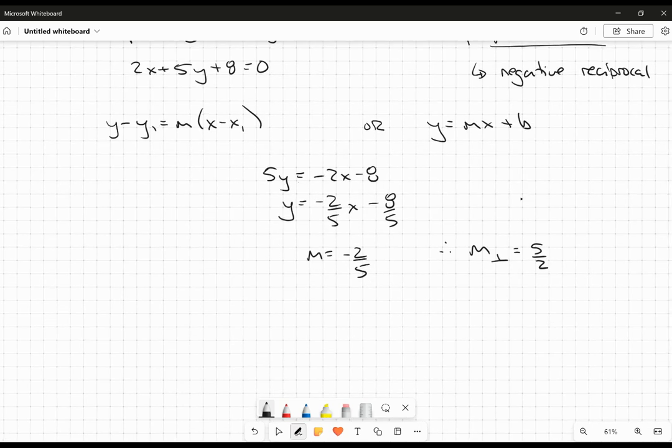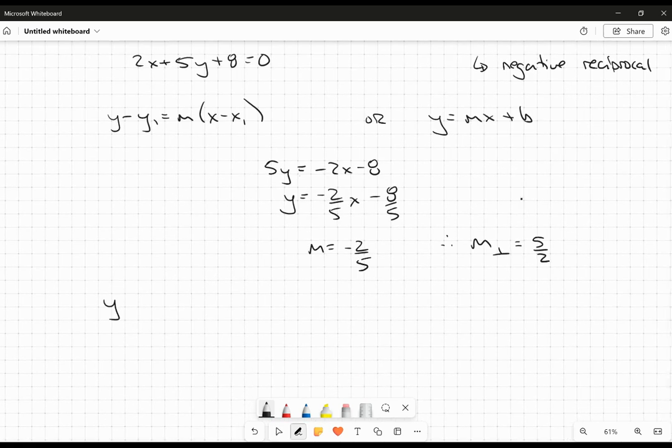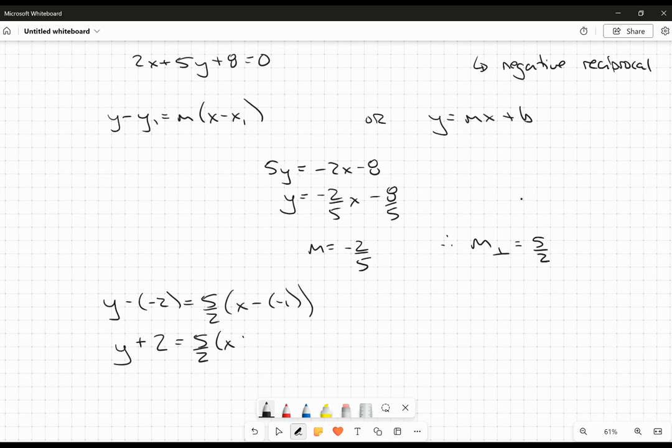But now I have everything I need. So again, I know it's going through the point (-1, -2). So this will be y - (-2) = 5/2(x - (-1)). And then I just need to simplify the negatives. So y + 2 = 5/2(x + 1).